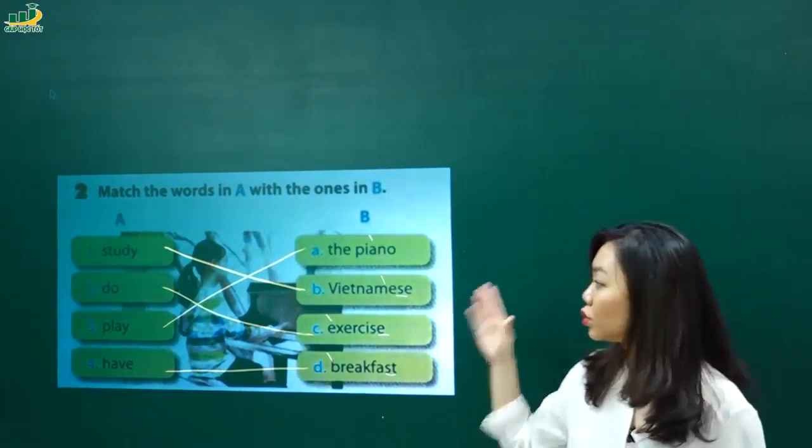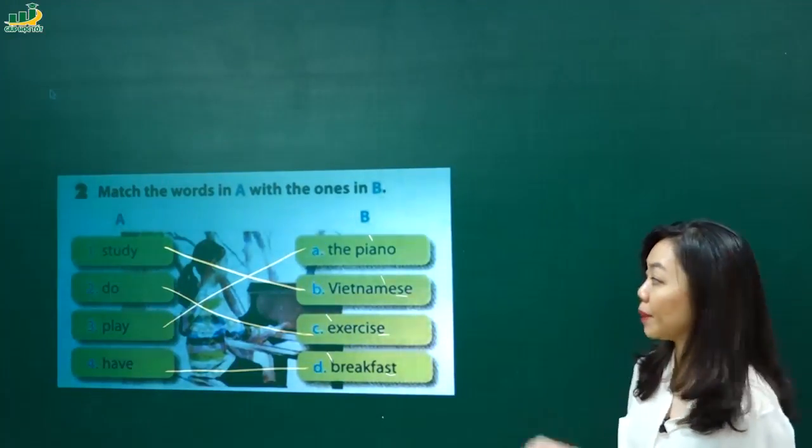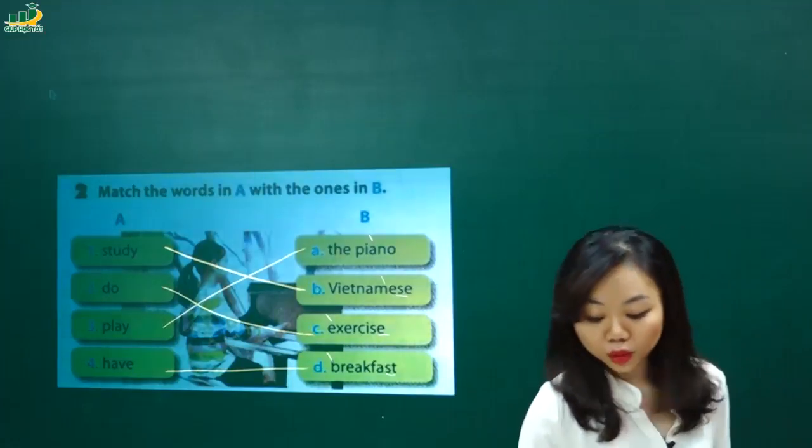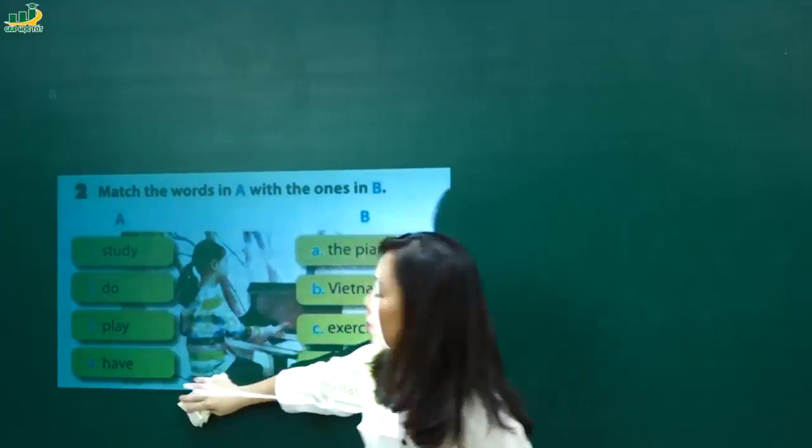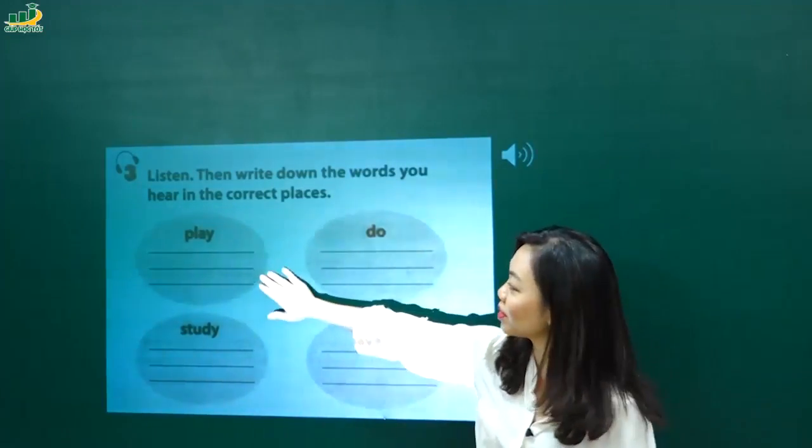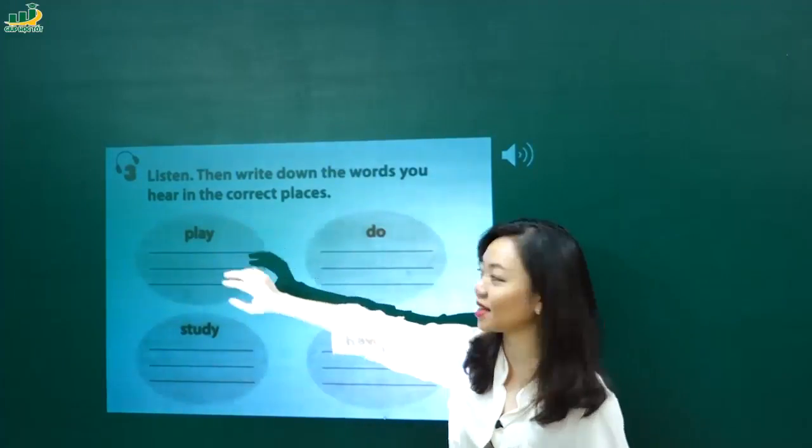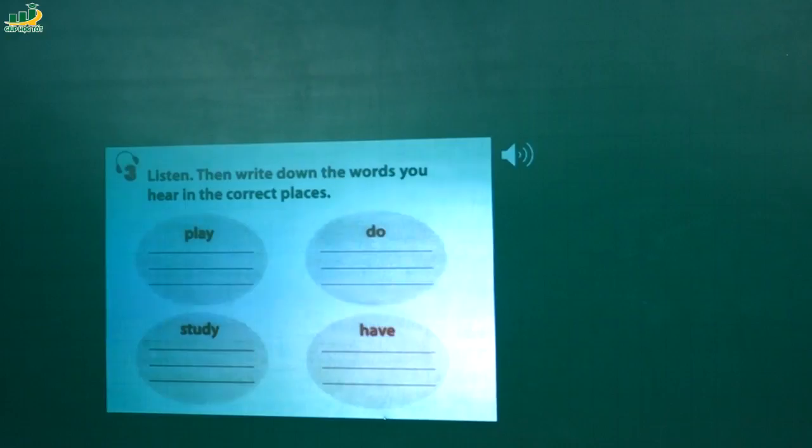Nào bây giờ để củng cố thêm về cái cách sử dụng của 4 cái động từ study, do, play và have. Thì mình sẽ làm một bài tập nghe, kết hợp vừa nghe và mình sẽ học lại cách sử dụng luôn. Và ngay bây giờ thì cô sẽ cho các em nghe một cái bài mà là giáo viên bản xứ sẽ nói cho các em chứ không phải là cô nói. Ok được không? Ngay bây giờ thì các em sẽ được nghe giáo viên bản xứ nói và mình sẽ nghe để điền vào từng cái nhóm một nhé. Em nghe được play cái gì đó. Em sẽ điền vào những cái phần còn trống này giống như do, study và have.